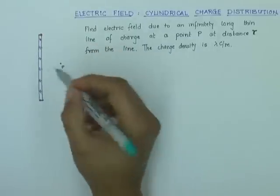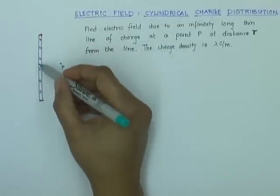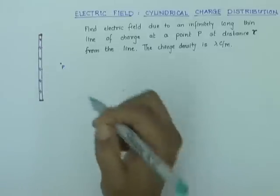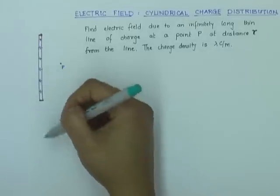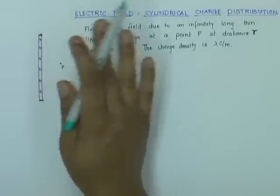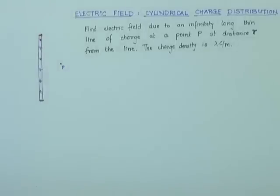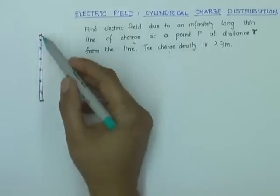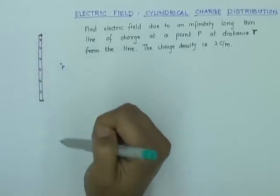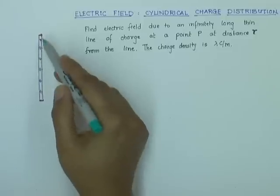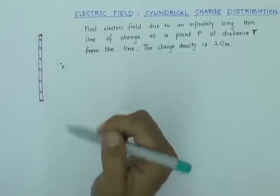One thing to notice is that though we are showing the wire having some significant radius, the radius is very small compared to the length of the wire, so you can ignore the radius or thickness of the wire. This is a symmetrical charge distribution — the symmetry is cylindrical because the wire is essentially like a cylinder.